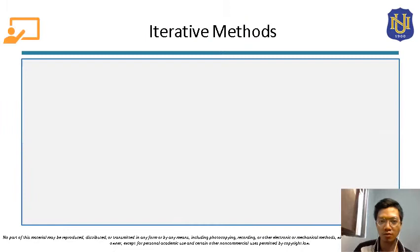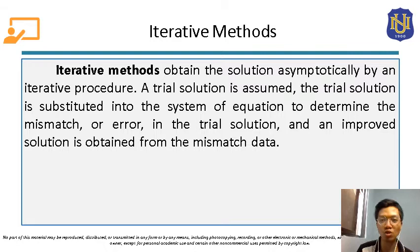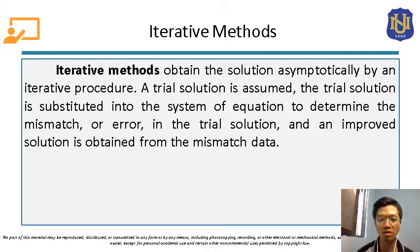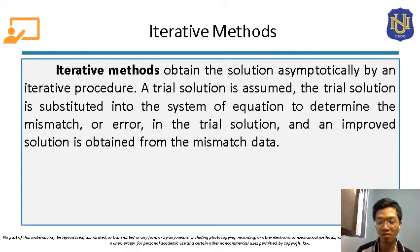Iterative methods obtain the solution asymptotically by an iterative or repeated procedure. A trial solution is assumed, then substituted into the system of equations to determine the mismatch or error. An improved solution is obtained from that mismatch data. We solve a system of equations by substituting the values obtained from previous iterations, repeating until we get the desired accuracy.